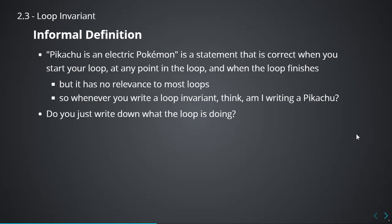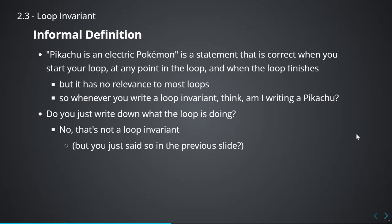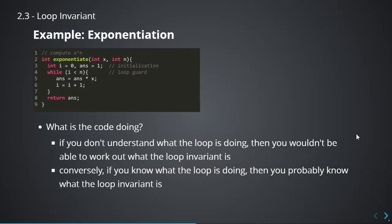But do you just write down every step in a loop? No, you don't. That's not a loop invariant. With the loop invariant, you need to have something more than just what the loop is doing. Of course, to write the loop invariant you have to understand what the loop is doing. If you don't know what the loop is doing, there's no way you can write what the loop invariant is. But if you actually know what the loop is doing — most likely because you wrote the loop — then you probably know what the loop invariant is.